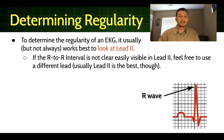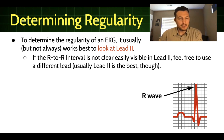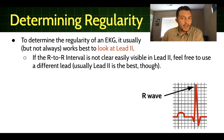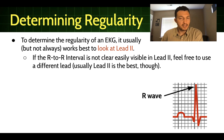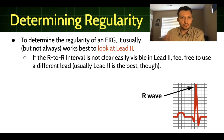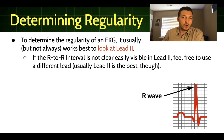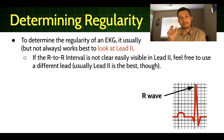To determine the regularity of an EKG strip, in my opinion, it's usually easier to look at lead two, but you can really use any lead. Lead two usually gives really nice distinct R waves or QRS complexes, so it's sometimes the easiest. What we do to identify the regularity is look at the R-to-R interval and see if it is consistently the same length or the same duration in time.